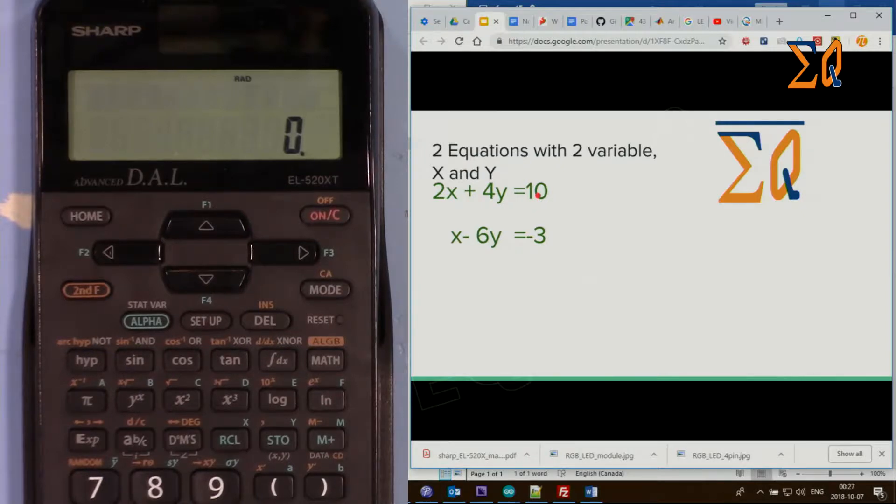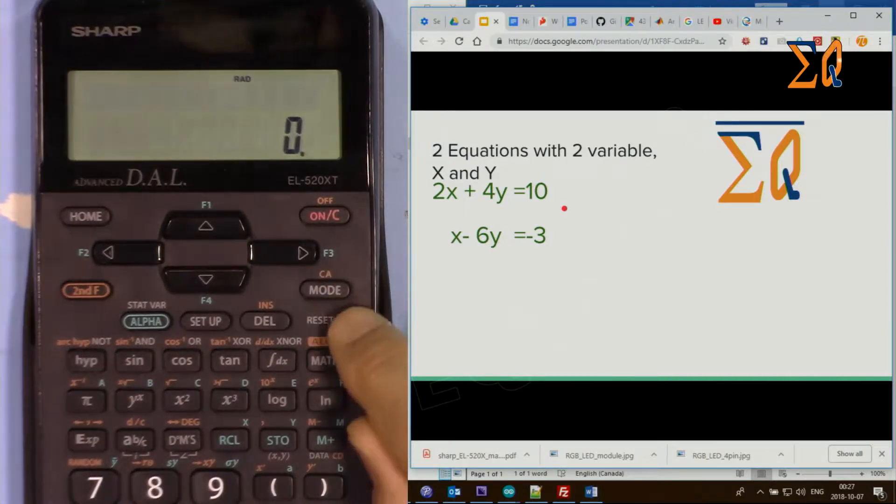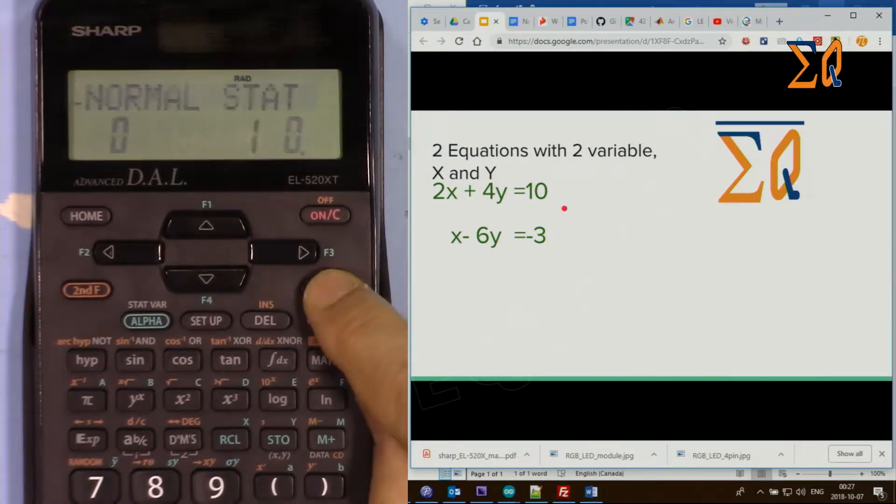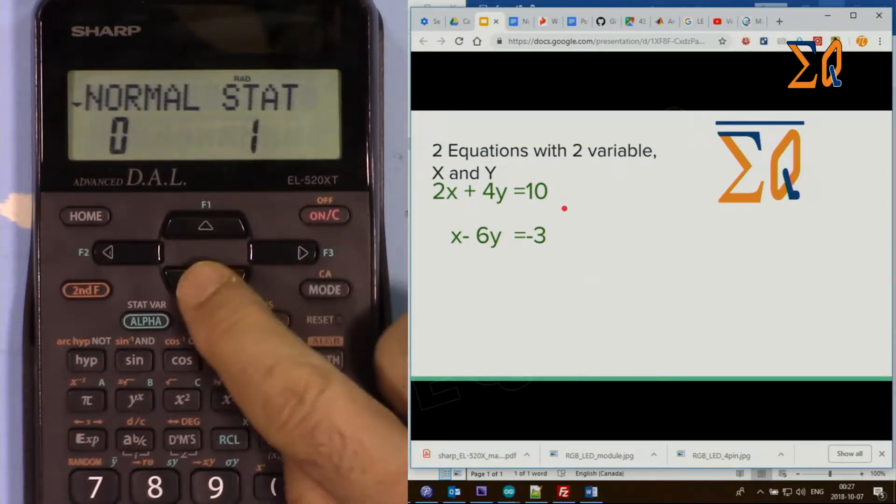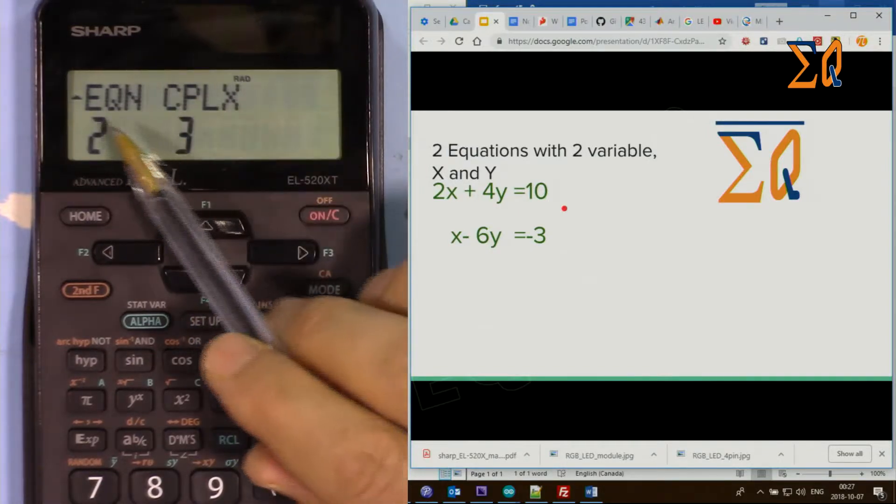If the equation is given with constant on the other side, the sign will change. So if you see it was equal to zero, move the value that is constant without variable and change the sign. This if we move it here will be plus three, so just move it there and then the calculator is ready for that. Press mode and then with the arrow go down here, it shows EQN equation.